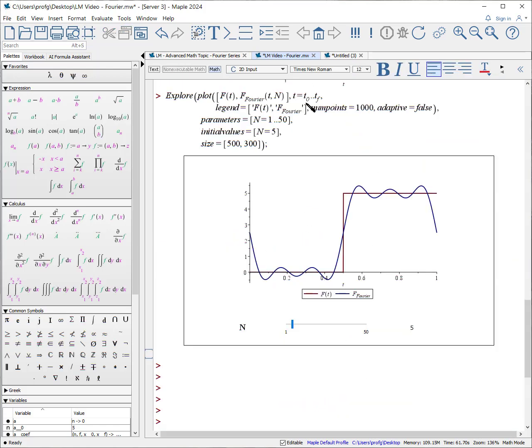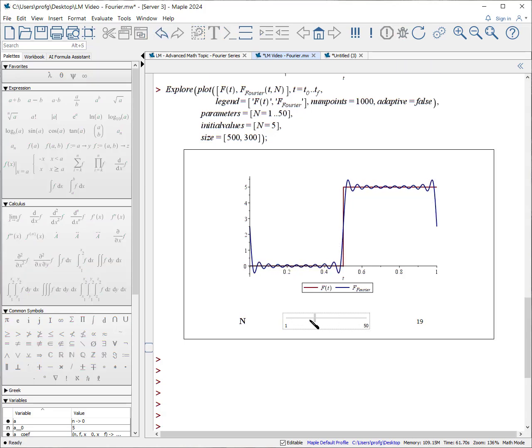Finally, playing the same game as before, we can explore the plot between the two functions for some number of points, even include a legend, and by using the explore function we can make n a slider parameter which allows us to visually see how the number of terms affects our approximation.